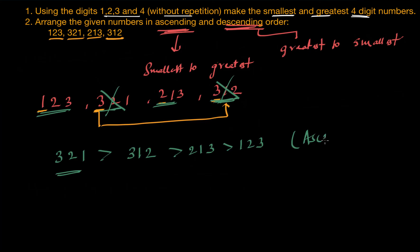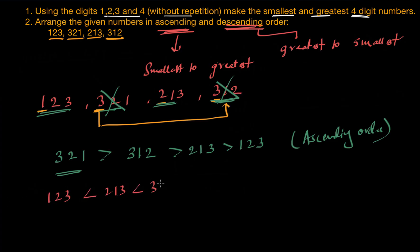So when we arrange numbers starting from the maximum value down to the smallest, that is descending order. And if we write it as 123, then 213, then 312, and finally 321 — that is ascending order.